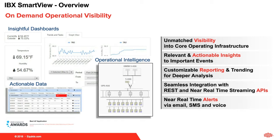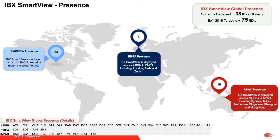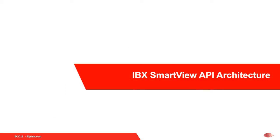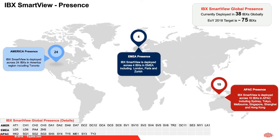Everything in IBX SmartView is important to you and speaks to the availability of the data center as it relates to your applications. Organization-wide access ensures your team has consistent and unified access to all that data, critical to managing applications efficiently wherever they're located. IBX SmartView is currently available in 39 data centers globally, covering about 30% of our footprint. We're bringing new data centers online each quarter with a goal of 100% coverage with DCIM and IBX SmartView very shortly. With that, I'll turn it over to Divesh.